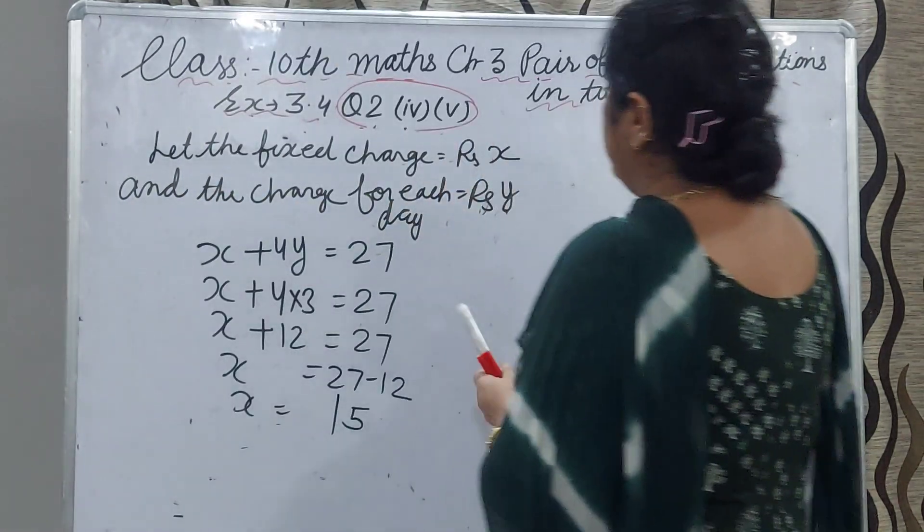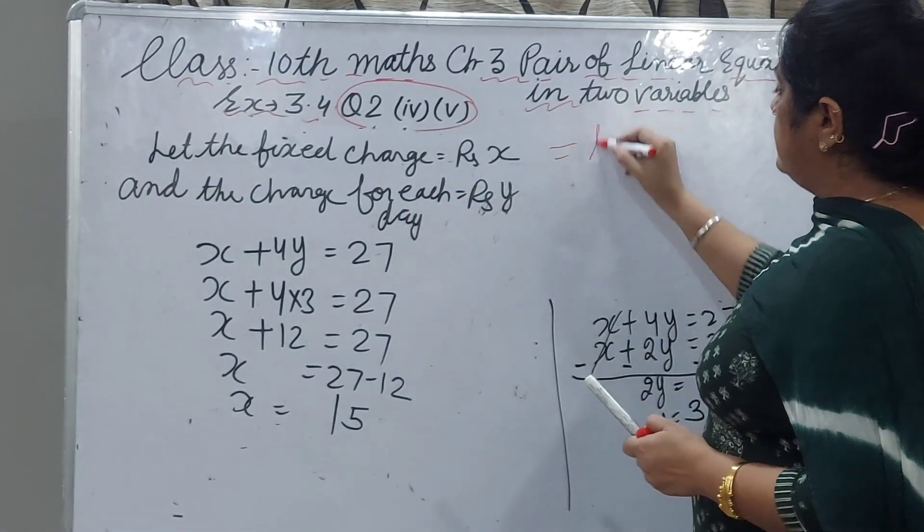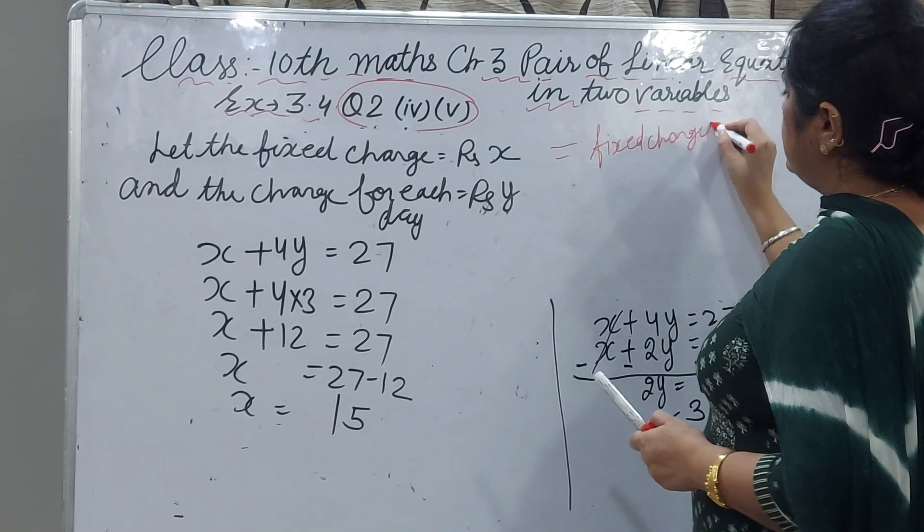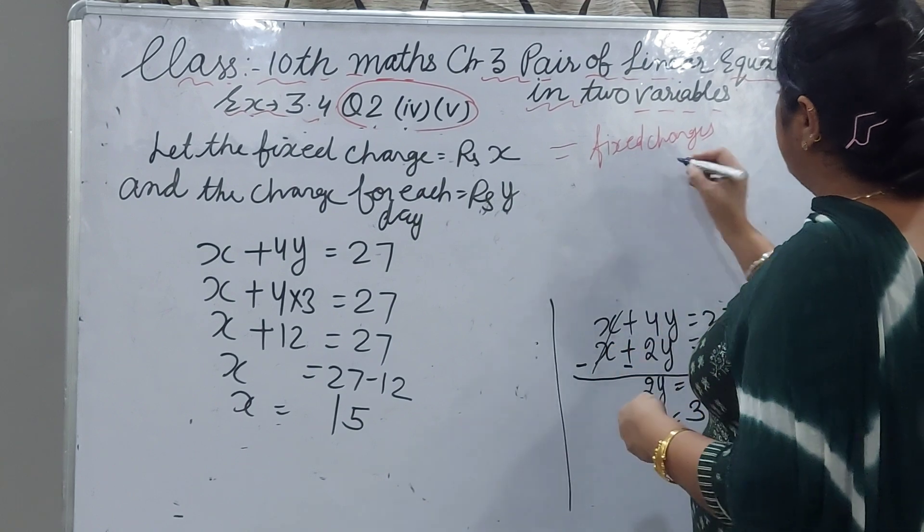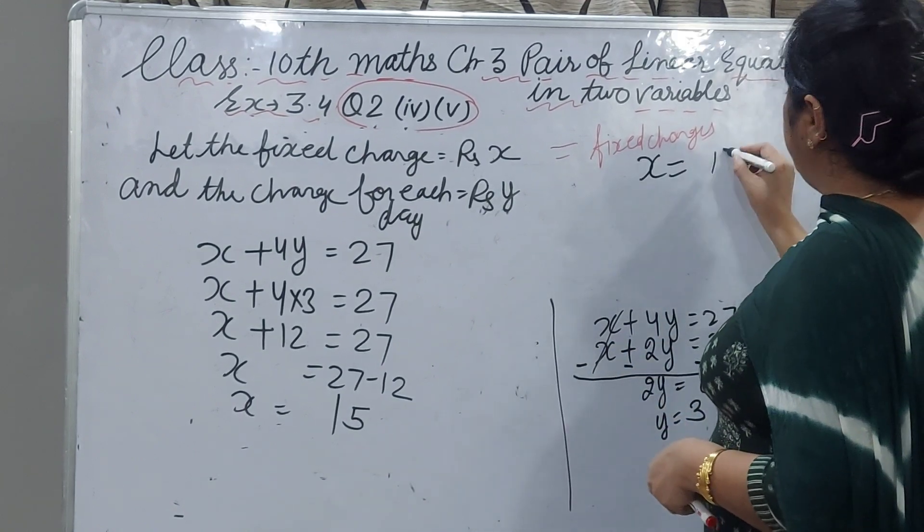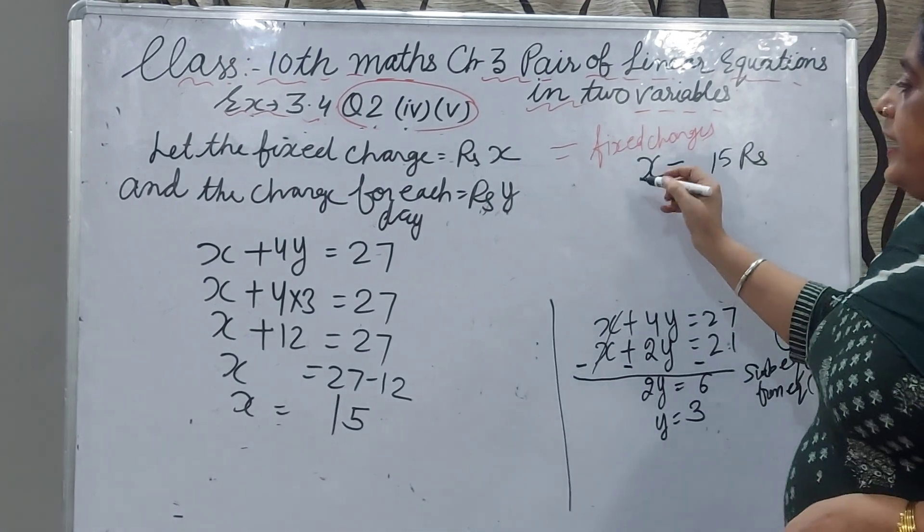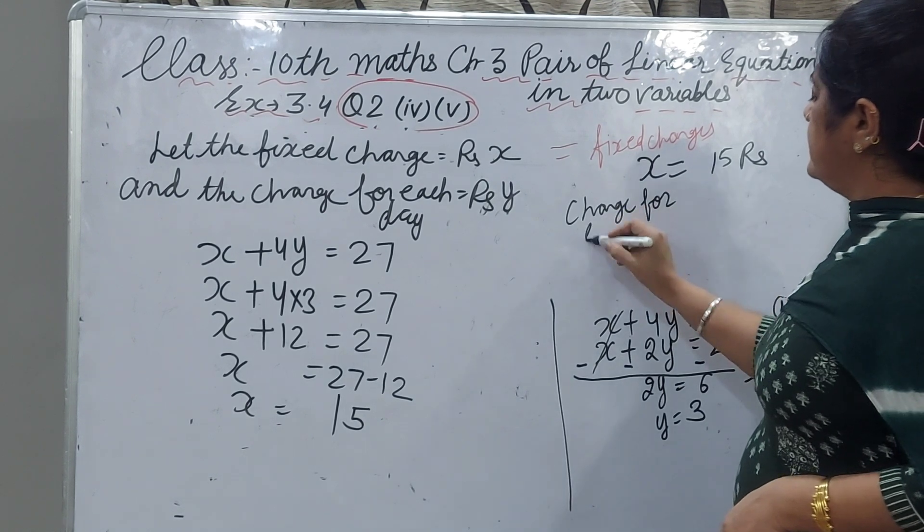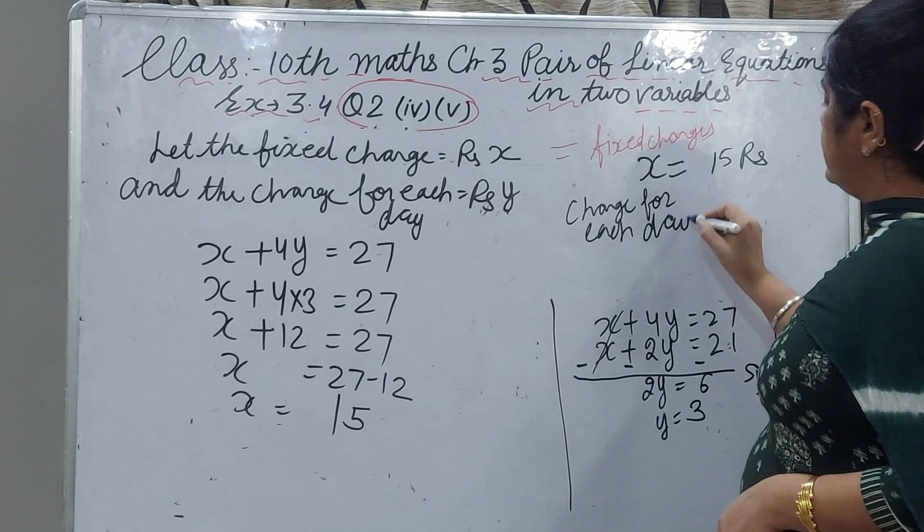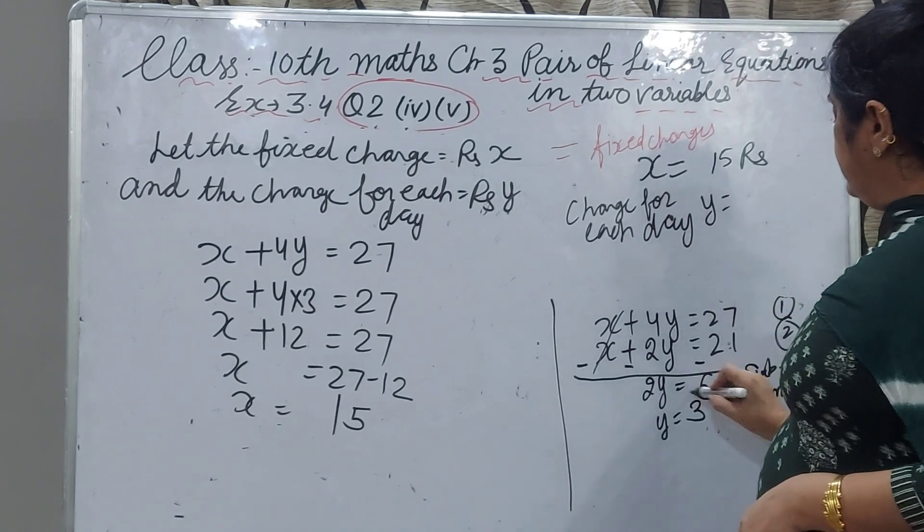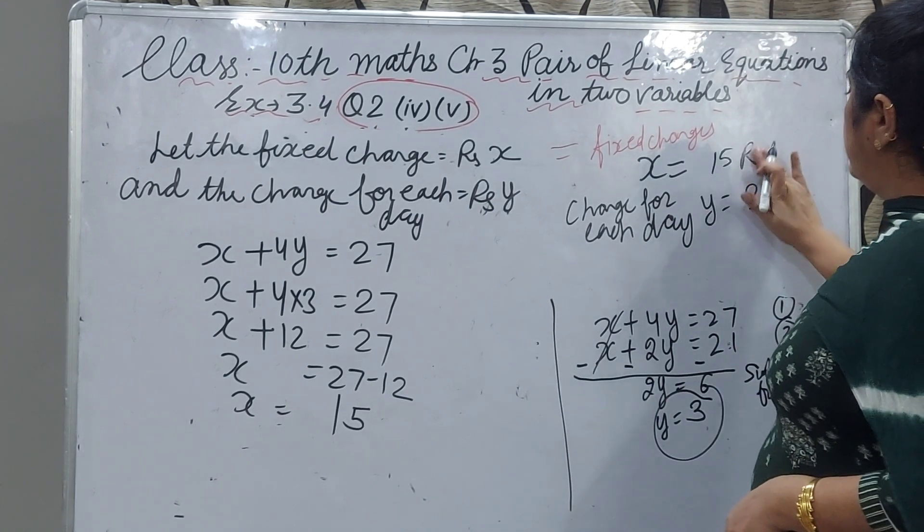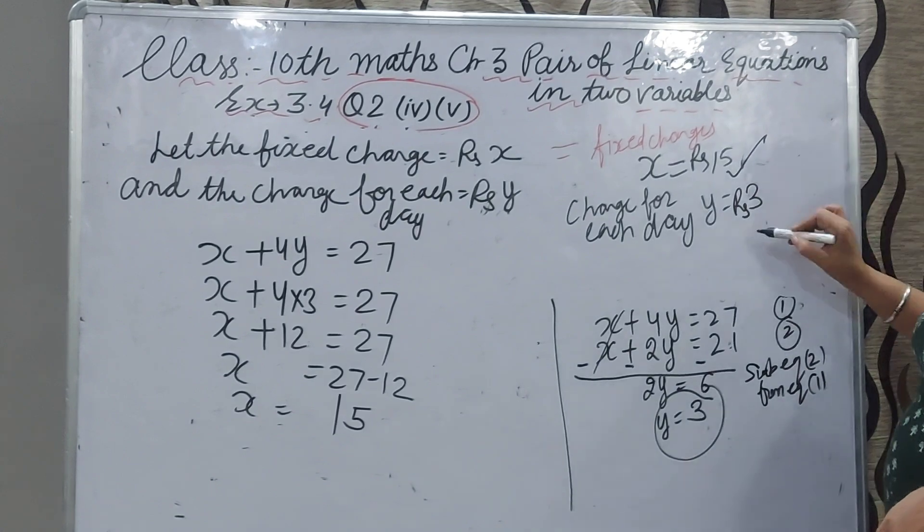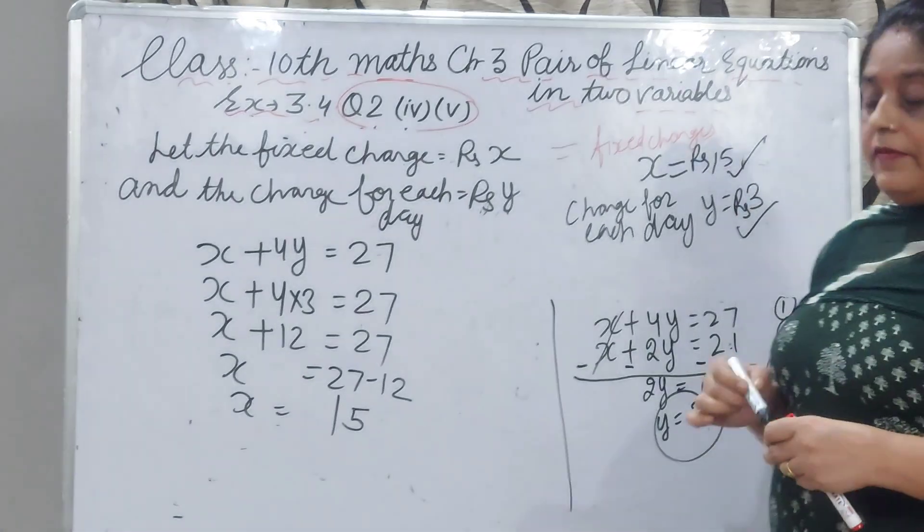Means fixed charges, x is equal to 15 rupees. And charge for each day, y that is equal to rupees 3. Rupees 3. Rupees always come first. That is your answer. x value 15 and y value 3. Hope you understood.